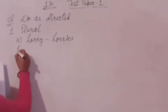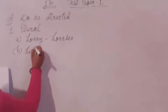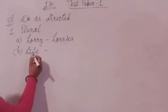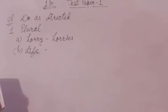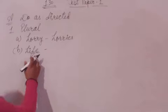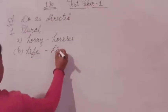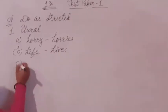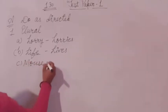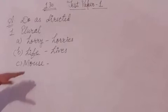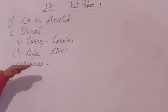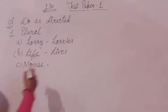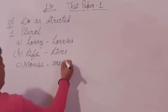Next is 'life.' This word ends with 'fe,' so we remove 'fe' and put 'ves.' Life becomes lives. Next is 'mouse.' This is an irregular noun, so it does not follow any rule. We change it to 'mice' in the plural. Mouse becomes mice.